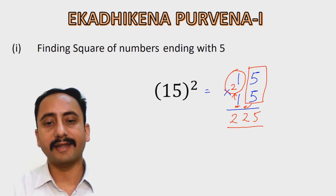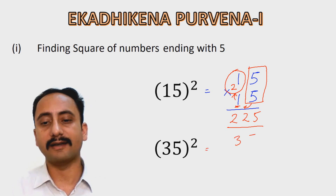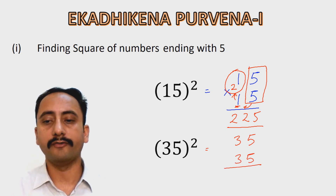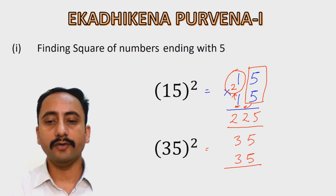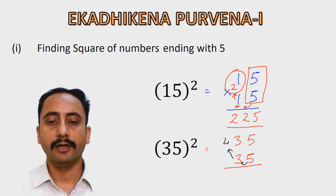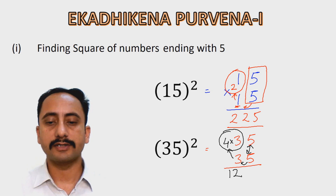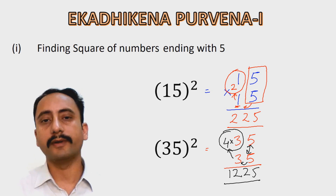Next example: 35 squared. 35 multiplied by 35 gives the square of 35. The previous number to 5 is 3, and one more than 3 is 4. Multiply 4 by 3 to get 12, then append the square of 5 which is 25. So the answer is 1,225.